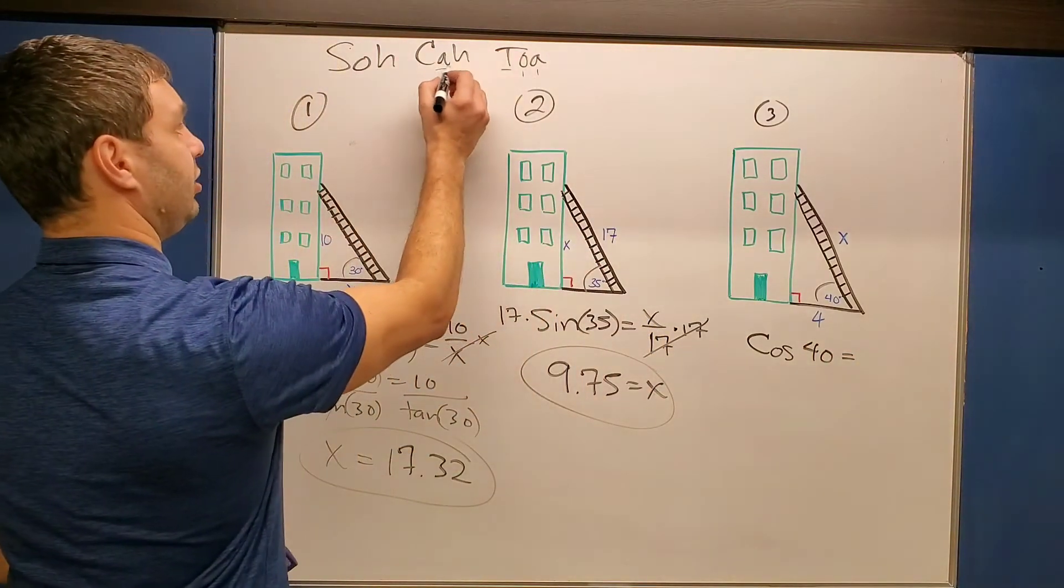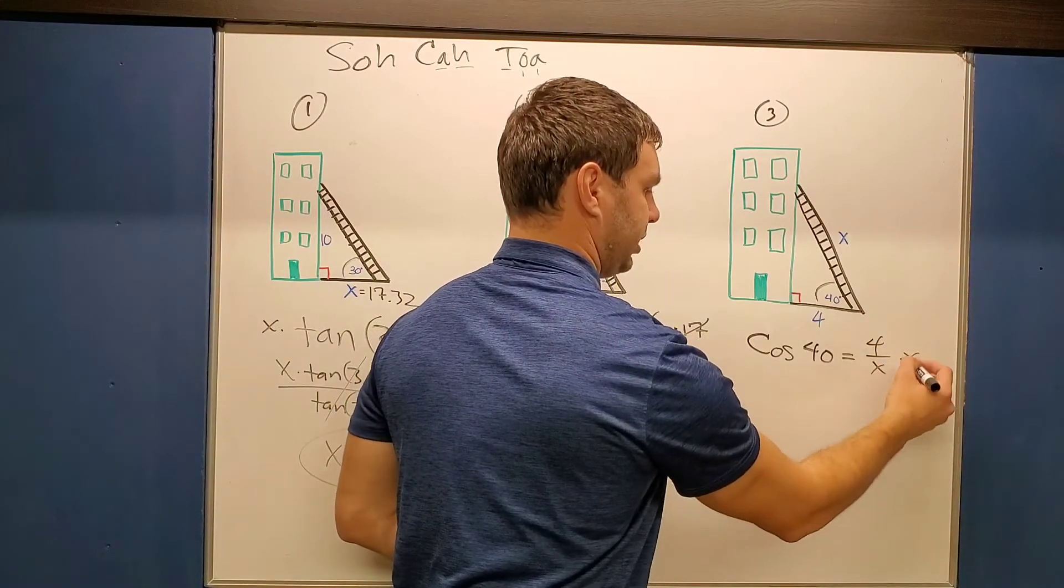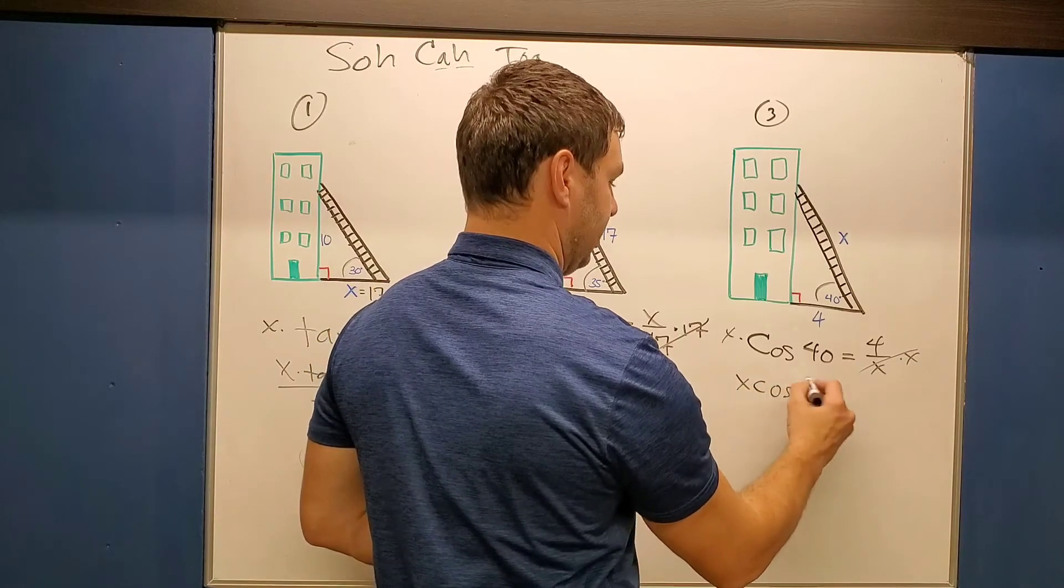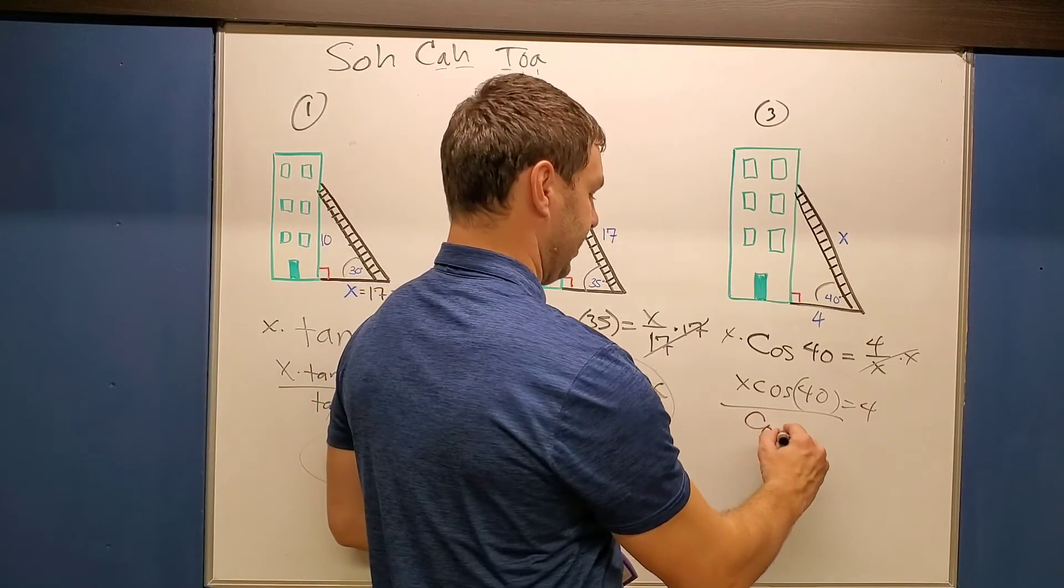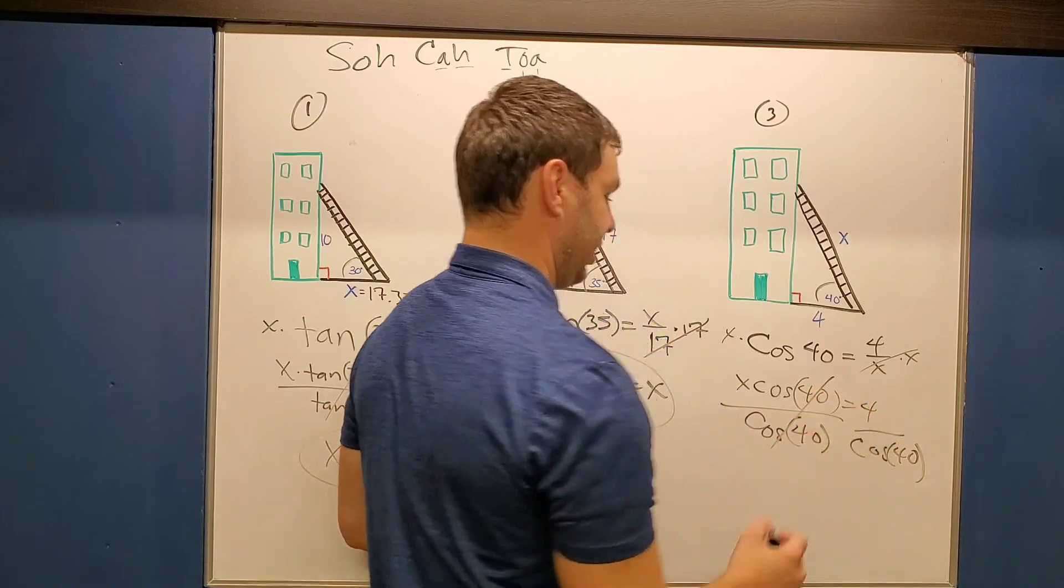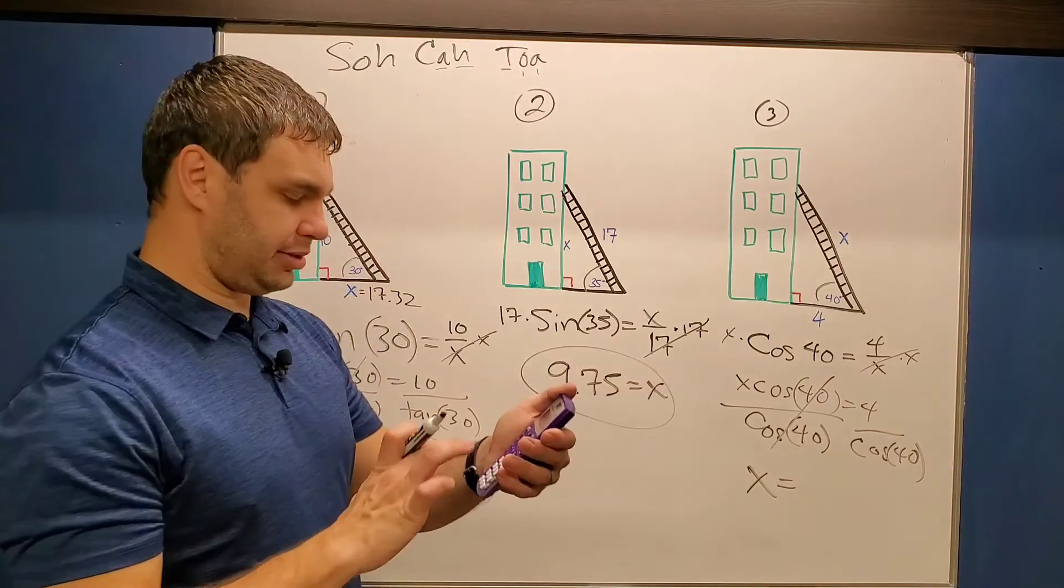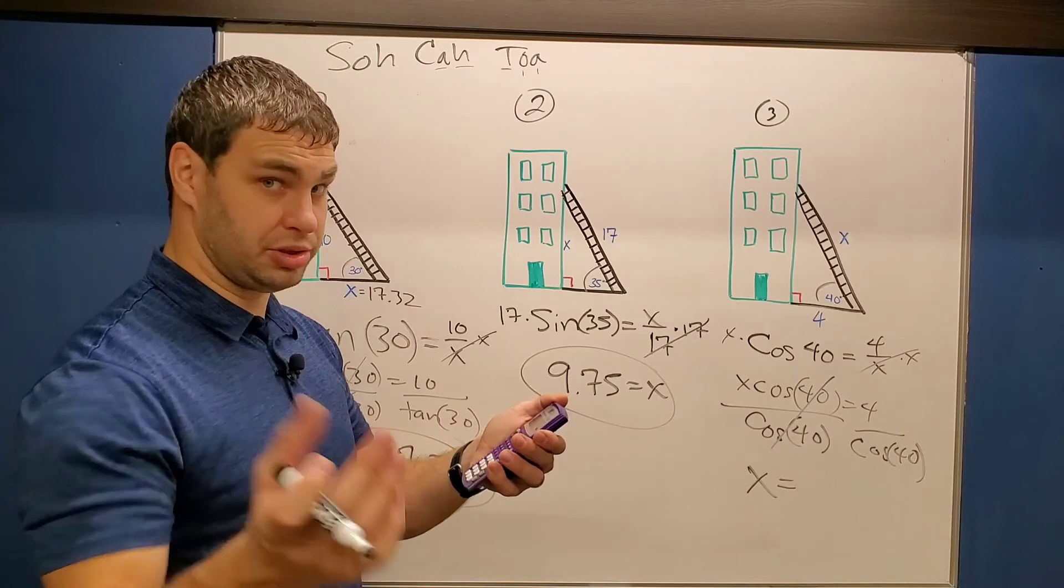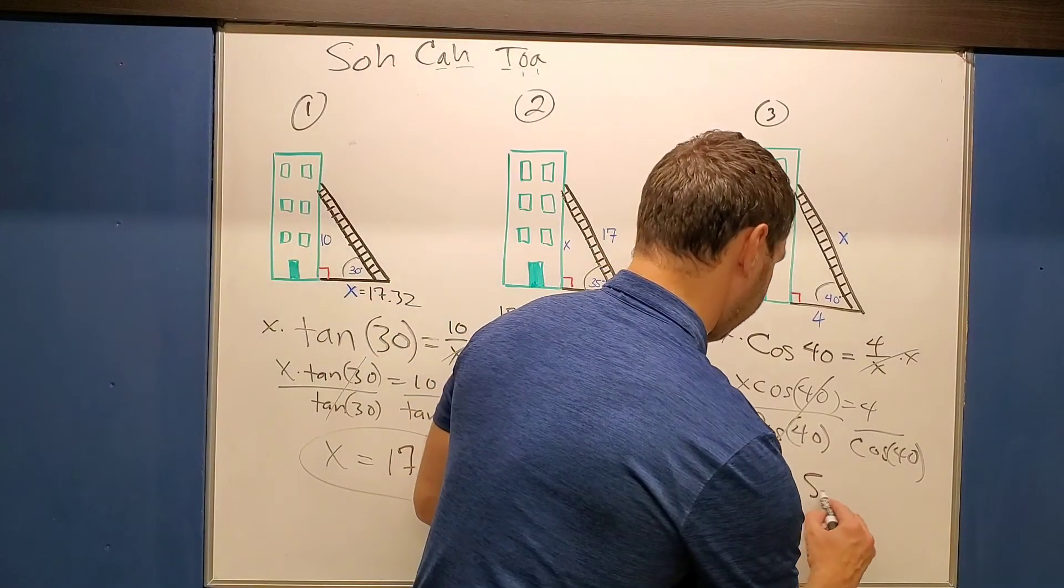Cosine of 40 degrees is how we write this out. Again, look at how it's written in SOHCAHTOA. Adjacent over hypotenuse, four over X. Multiply both sides by X, we're going to cancel over here. We have X cosine of 40 equals four. To get the X isolated, I have to divide by cosine of 40. They're going to cancel on the left side, leave me with just X, which is good. And on the right side in the calculator, type in four divided by cosine of 40 or whatever numbers you have on your problem. And this should give me for this one 5.22.